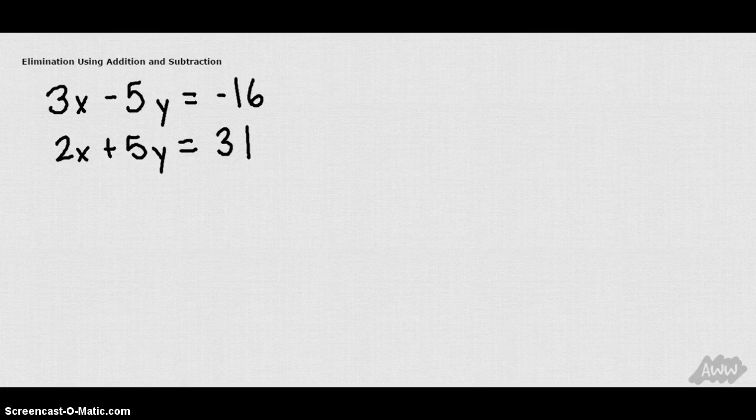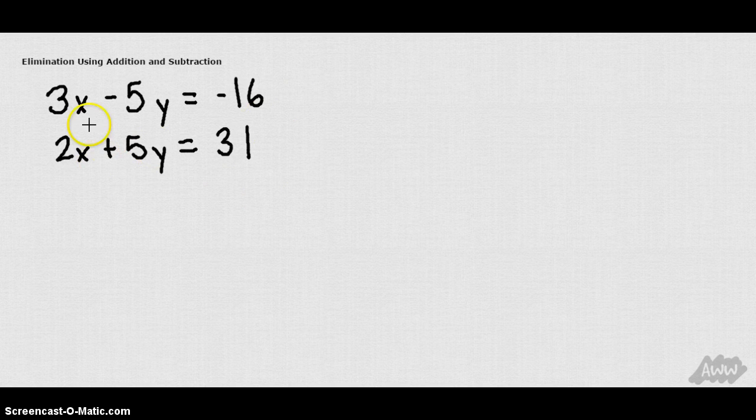Now there's various ways to employ elimination. The first way we're going to look at is addition and subtraction. So I have these two equations here. What I want to do is take advantage of these similar terms, these similar y terms. And I'm going to cancel those out by adding these two equations together.